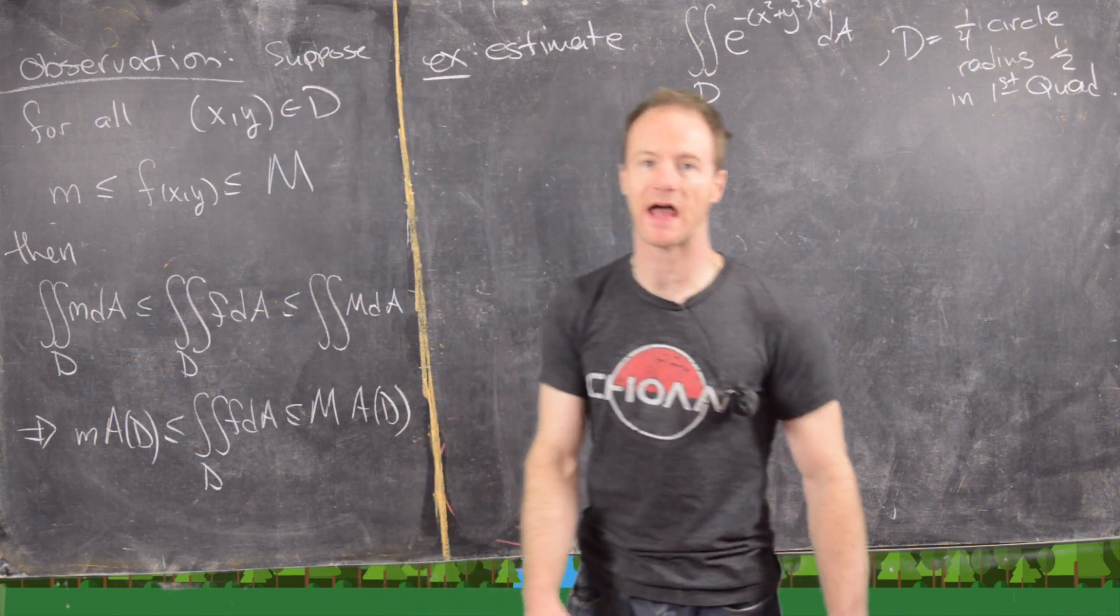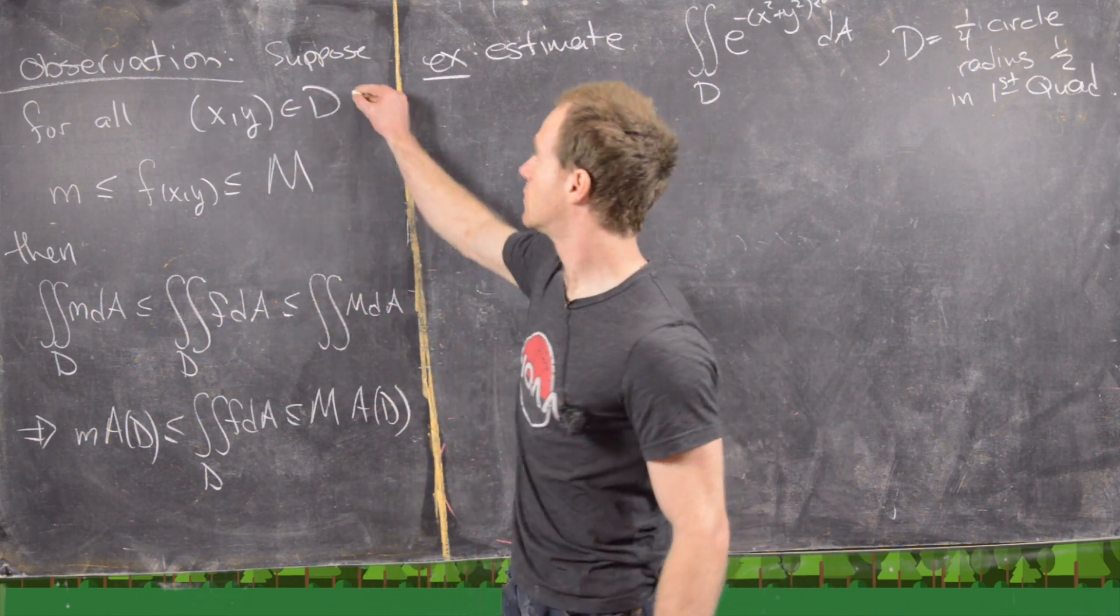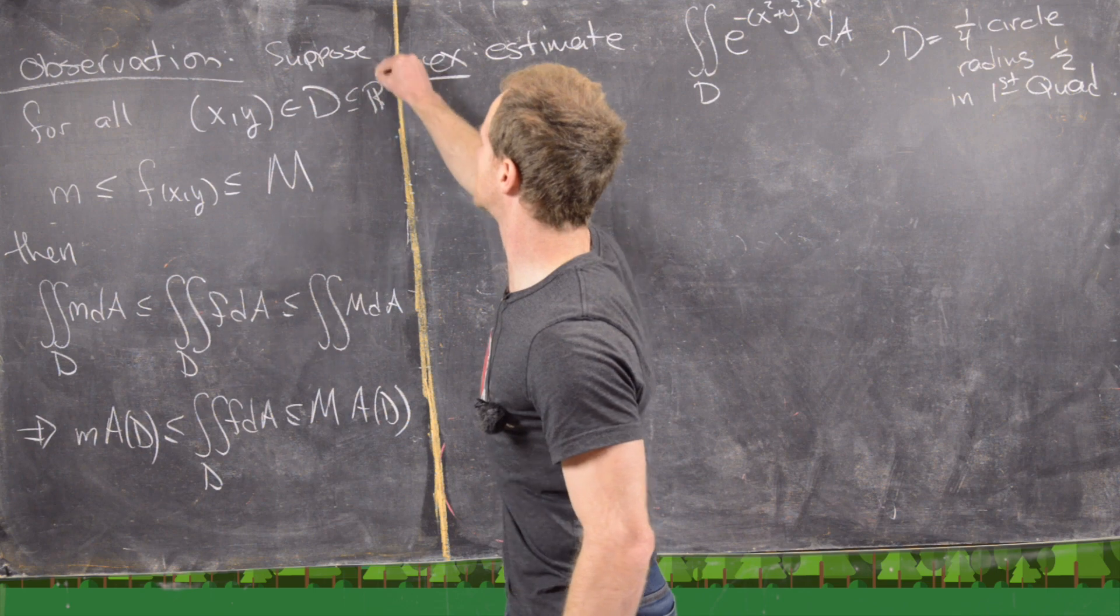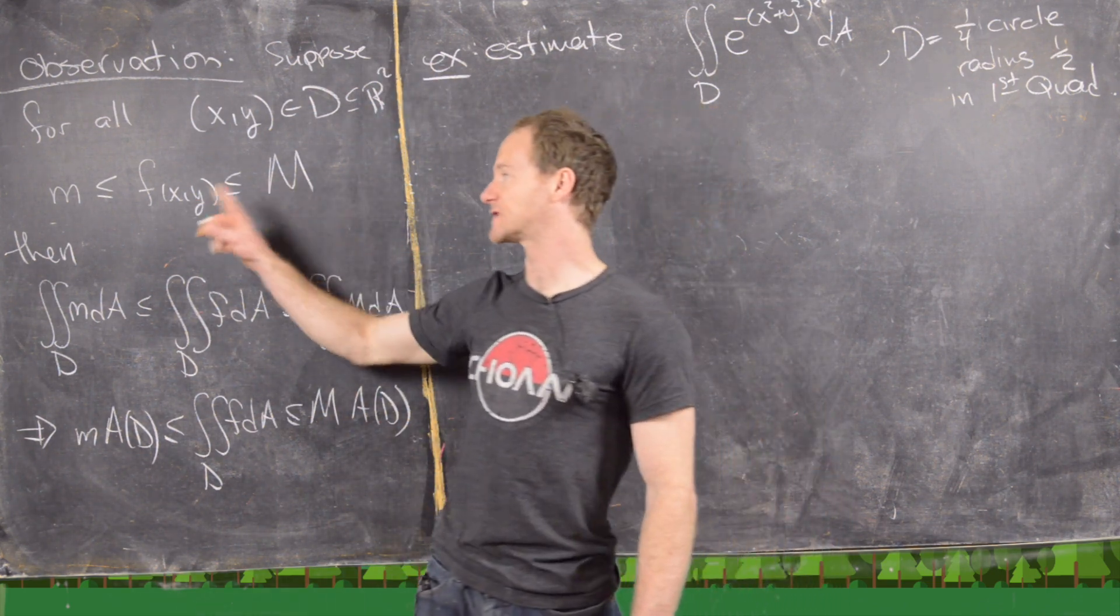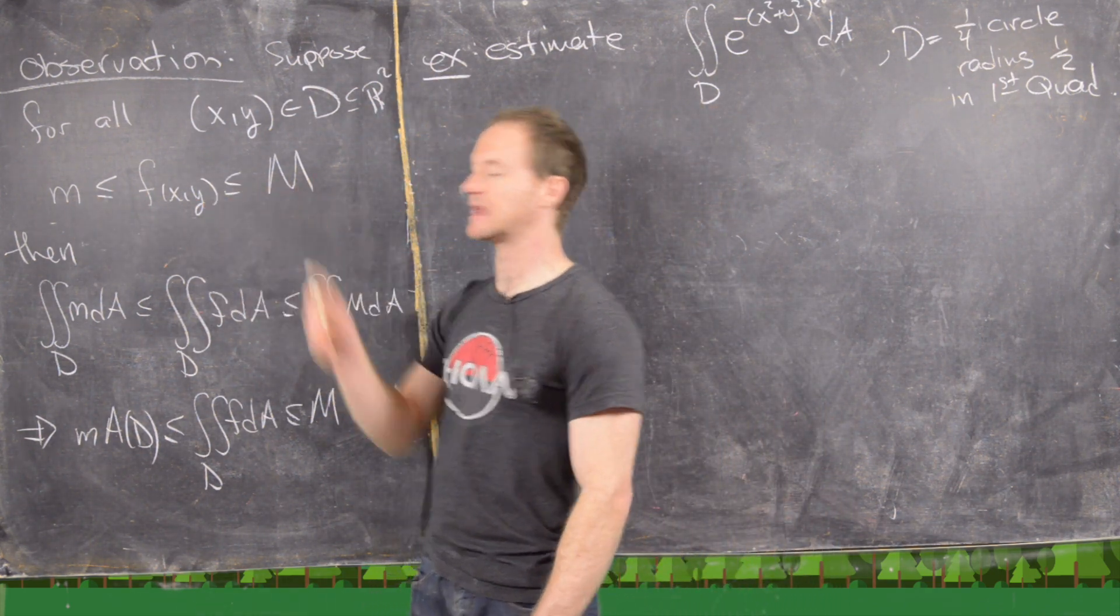So let's suppose that we have for all x and y in D, which again, that's a subset of R², we know that f(x,y) is between little m and capital M. So we can get that by using the extreme value theorem for a multivariable function.